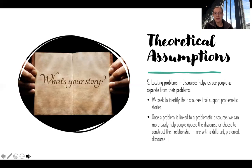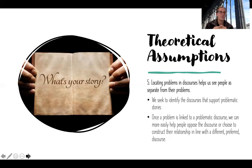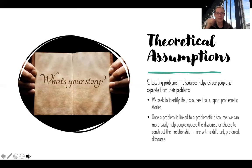Theoretical assumption number five: locating problems in discourses helps us see people as separate from their problems. This is called externalization of the problem in narrative therapy. The problem is about the story being told, about the assumptions being made. The child who is into everything and has much more energy than their parent — the narrative therapist would say that child is not the problem. The problem is that mom doesn't know what to do and there's always a mess. The problem is the problem. The person is not the problem. That's really key for narrative therapy.